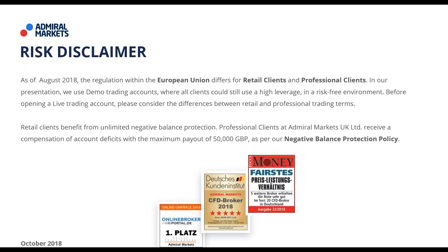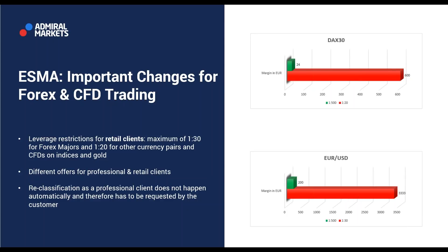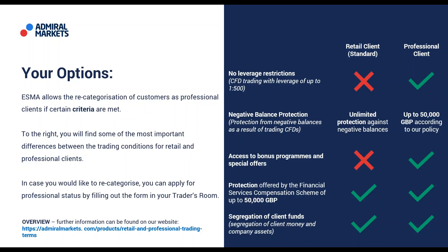If you are in the European Union and would like to read more about the topic of 2018 and maybe 2019 — the different offers, options, and regulation for retail clients and professional clients — this is also available online on our web pages. The margin requirements between retail clients and professional clients can be quite different. Professional traders eligible for professional client status can apply online. Retail clients benefit from unlimited protection against negative balances by regulation. Professional clients get a negative balance protection policy up to 50,000 British pounds, around 70,000 Euro.